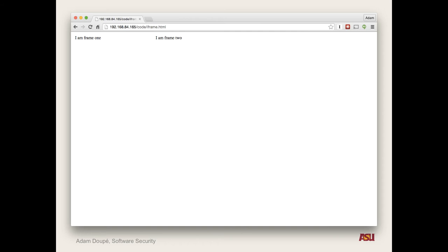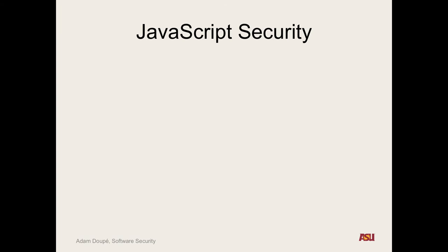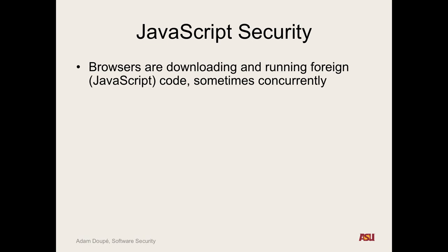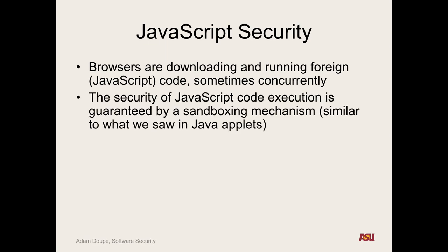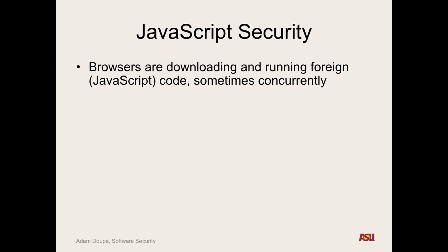What about JavaScript code executing in your browser with different tabs? What's happening in each of those tabs? Fundamentally, when we talk about web security, browsers are constantly downloading and running foreign code — often concurrently — coming from all over the place: frames happening at the same time, tabs. What should freak you out is: I don't want people running arbitrary code on my machine. Can a random website access my photos, my documents?